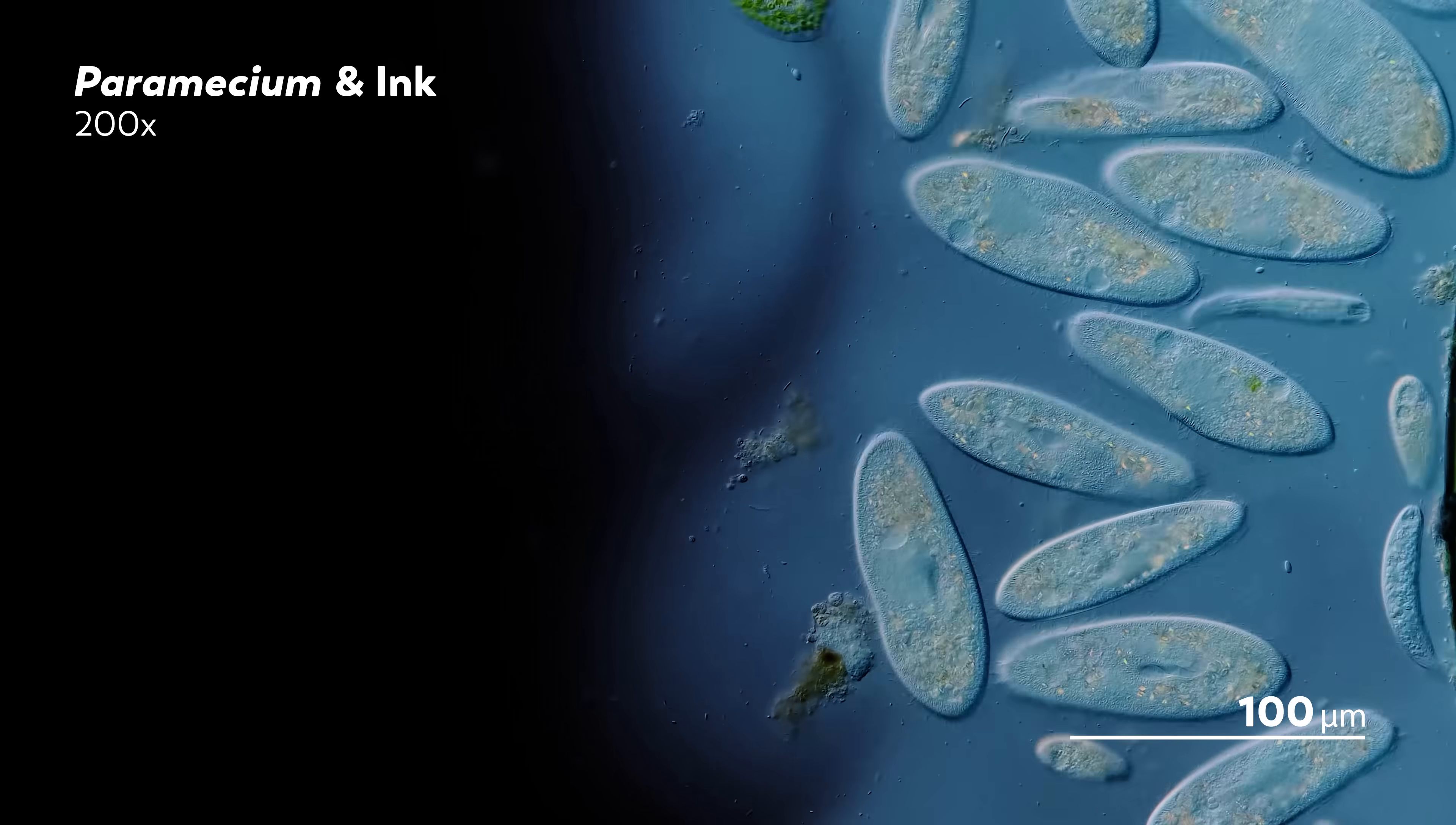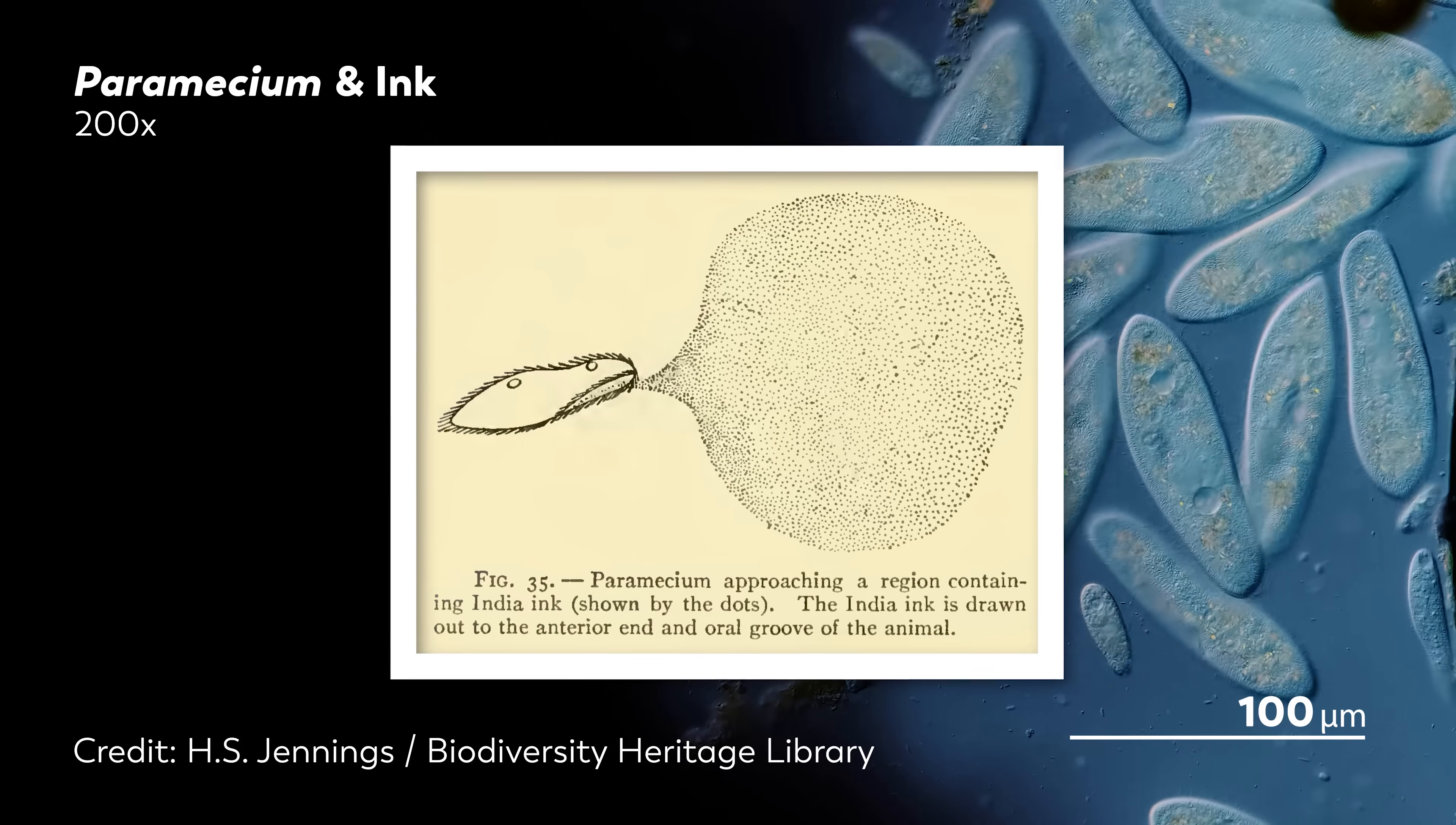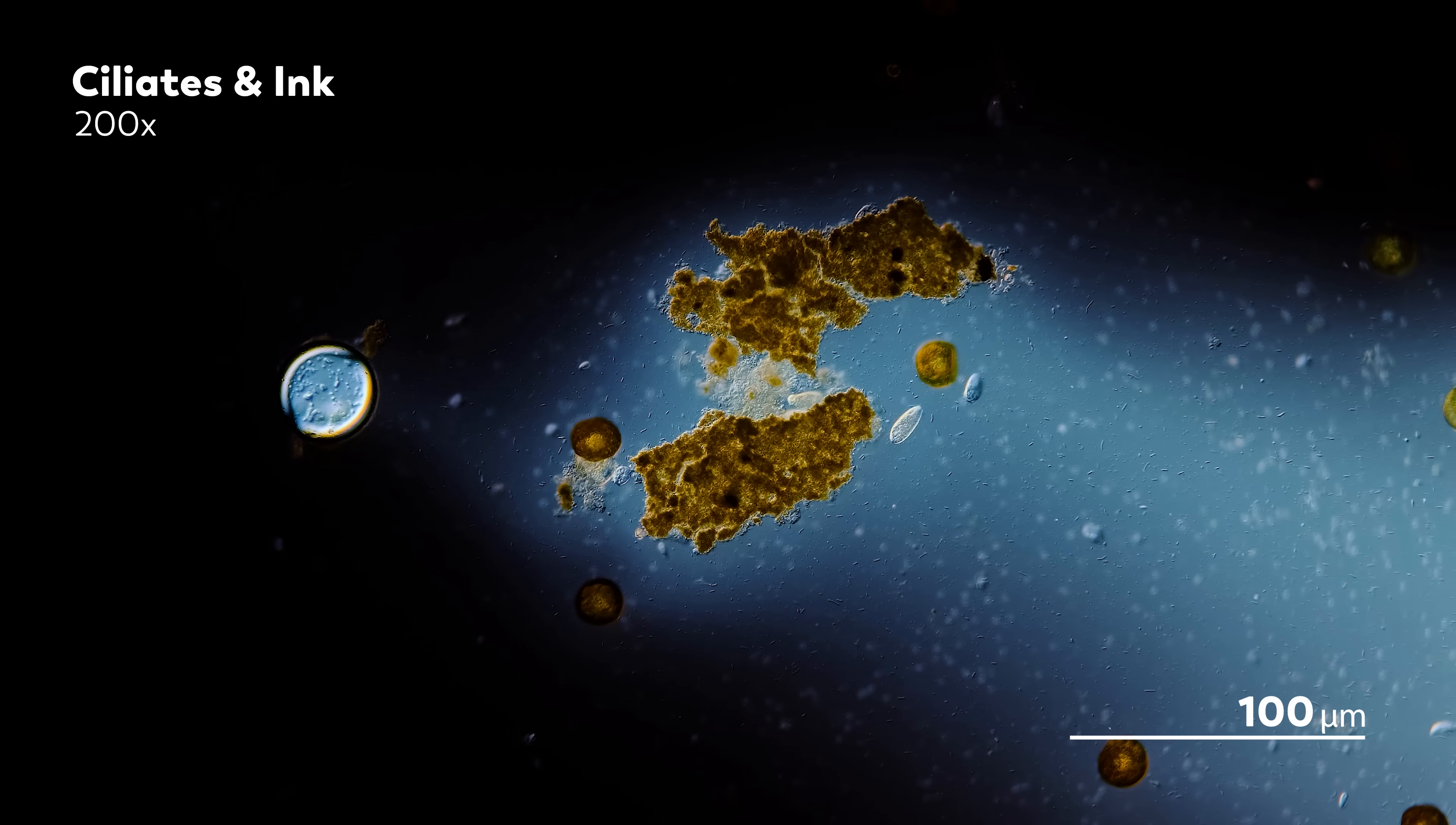Many of the early observers of paramecia relied on ink to understand the organism. For example, Herbert Spencer Jennings published works in the early 20th century that described the movement of the paramecium's oral cilia. Movement that he was able to see using India ink that he had added to the water. The movement of the cilia was recorded in the movement of the ink. There's something lovely about that image, almost as if the paramecium was an artist, creating a self-portrait out of the tools provided by an external observer.